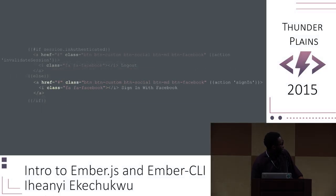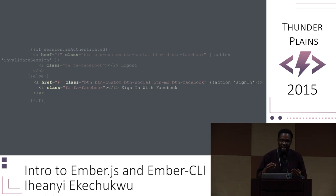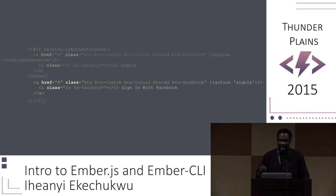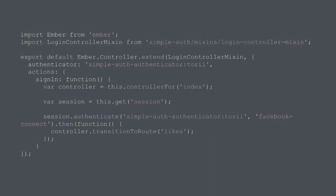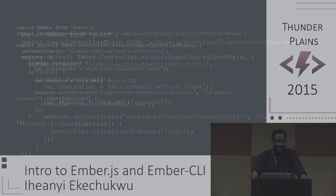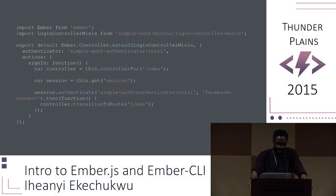We've given the button the sign-in action for the onClick event. Whenever you define an action on any tag within the front end, it's going to automatically default to onClick. In this controller, we define our sign-in action to authenticate the user using Facebook Connect when the sign-in button is clicked. After a successful authentication, we transition to the likes route, and you're done.